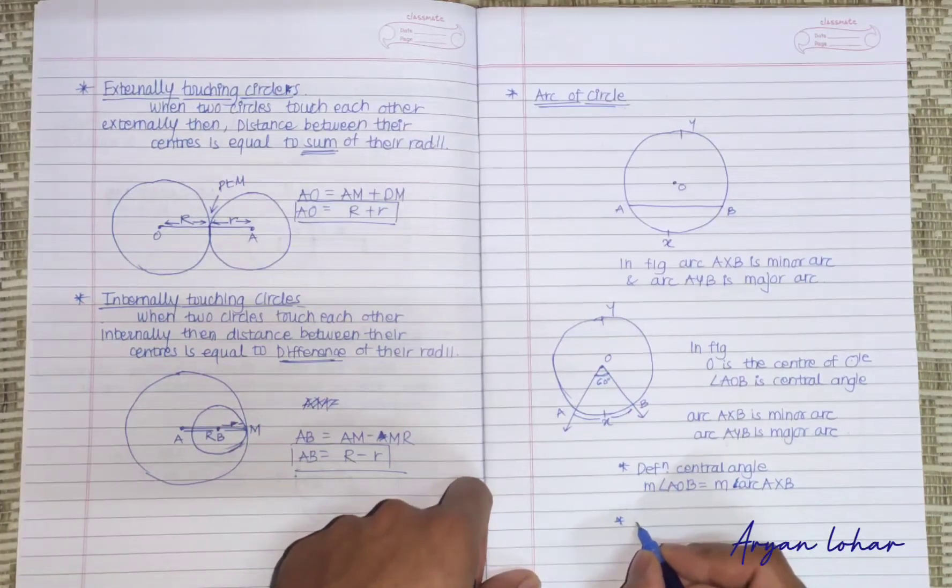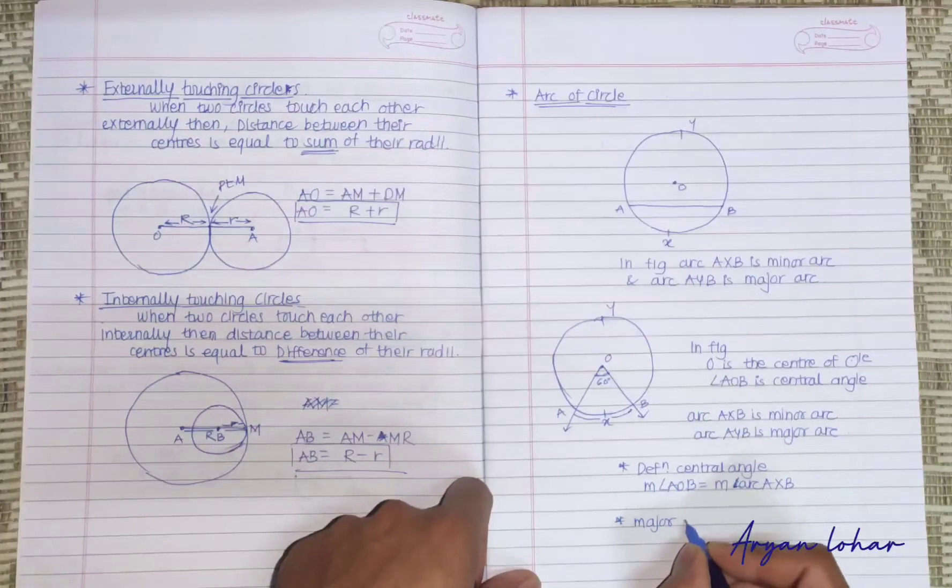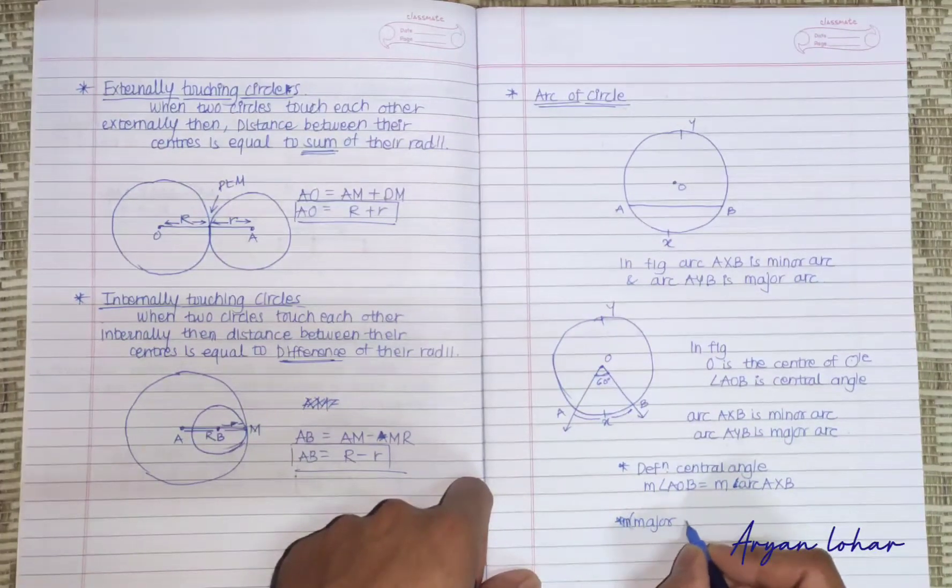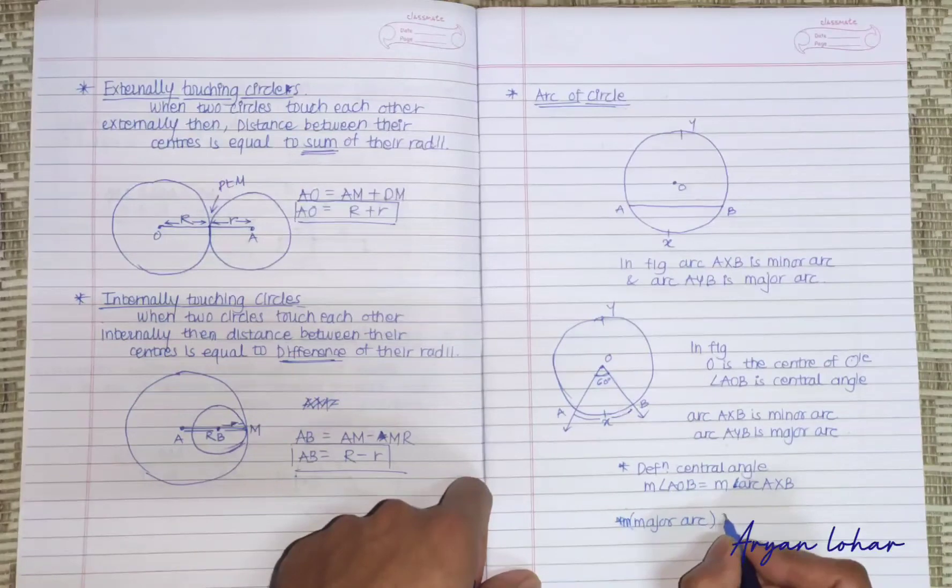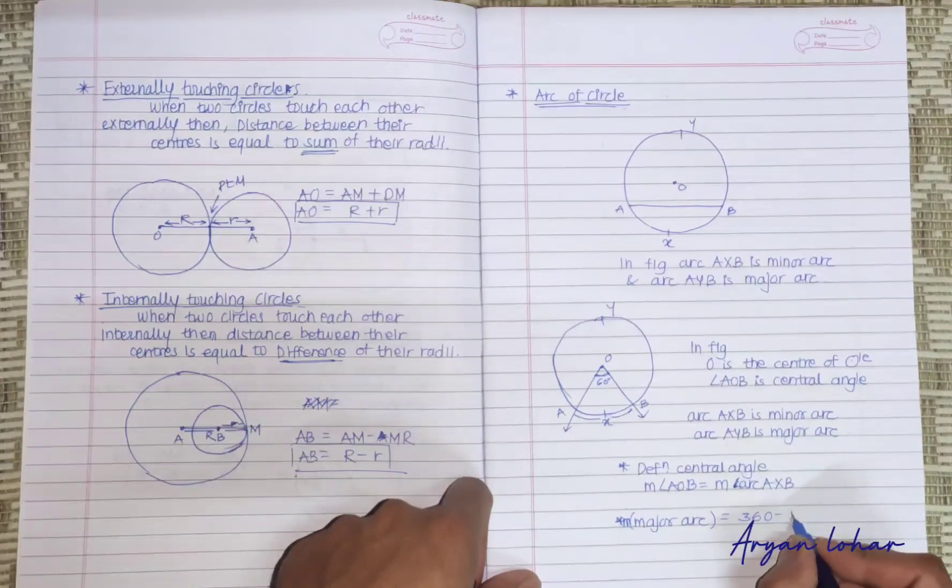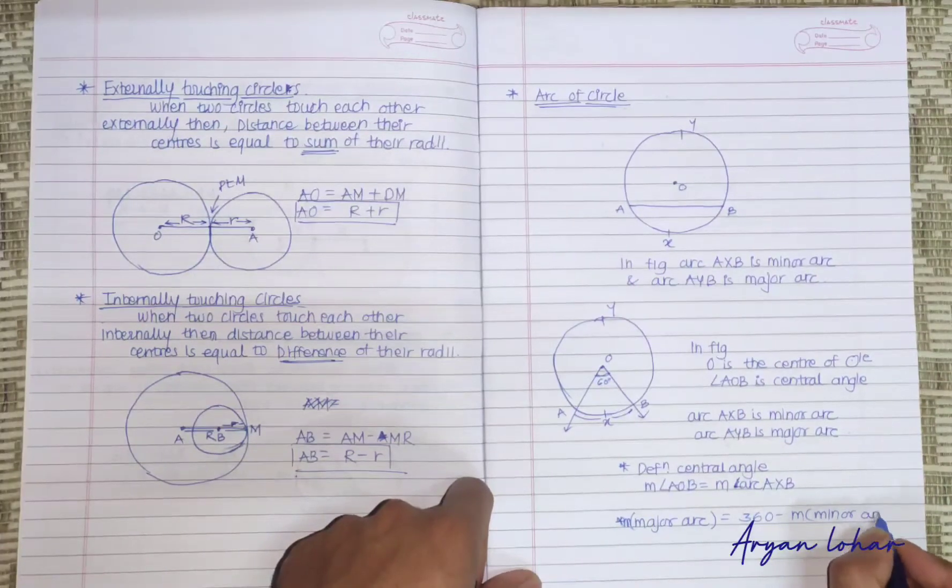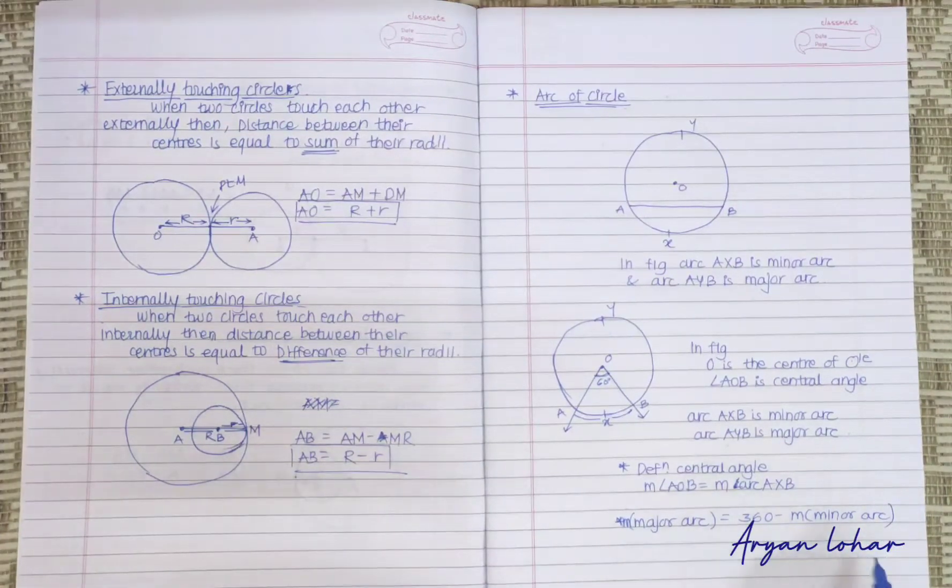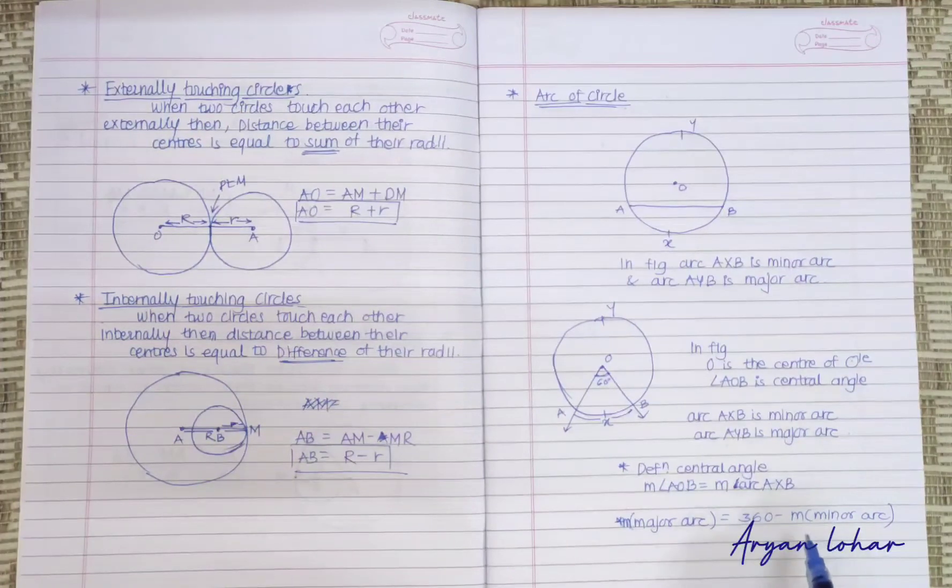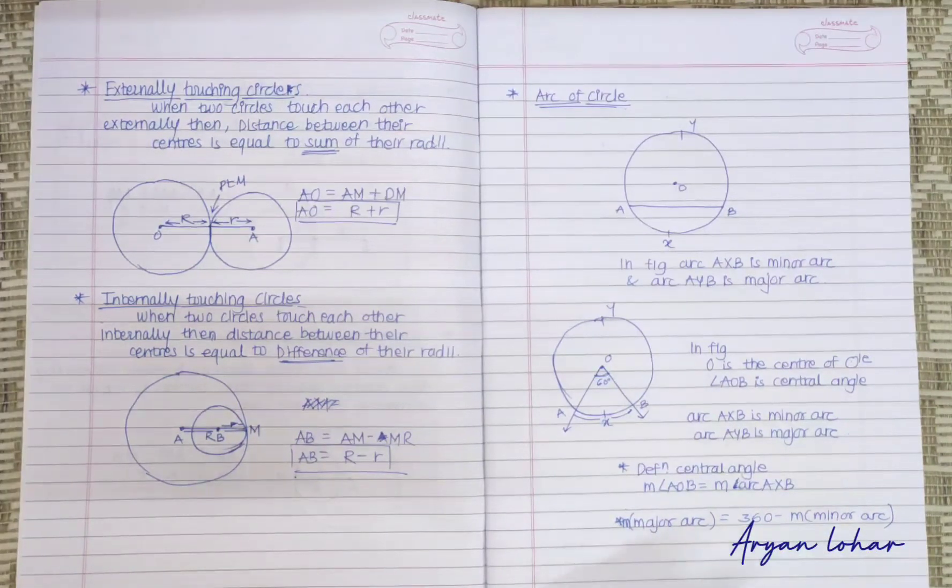And measure of major arc is equal to 360 minus measure of minor arc. Got it? If we have to find the major arc, we have to substitute 360 minus minor arc. And if we have to find minor arc, then minus 360 from major arc.